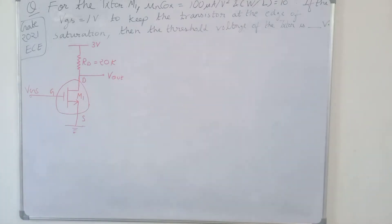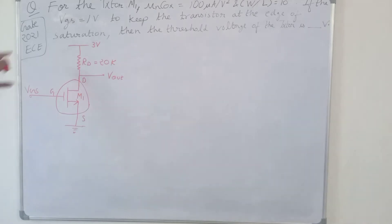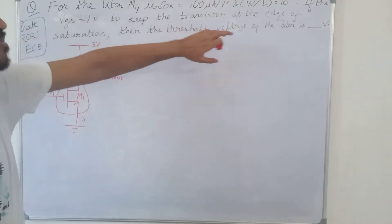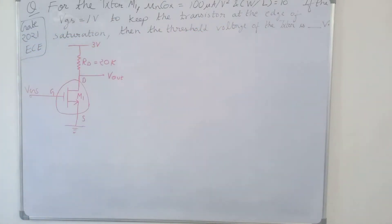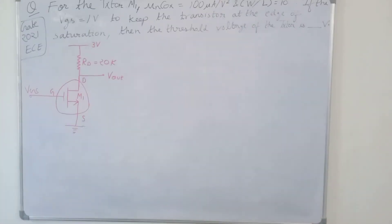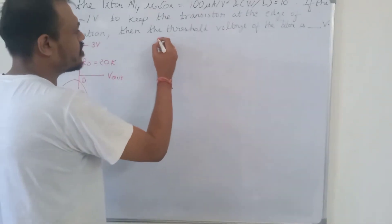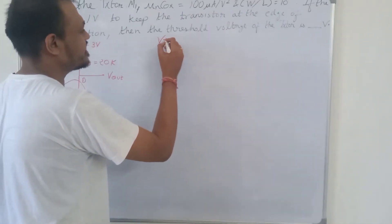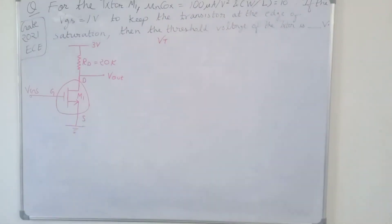For transistor M1, μn·COX equals 100 microampere per volt squared and the W/L ratio is 10. VGS is kept at 1 volt to keep the transistor at the edge of saturation. We have to find VT, the threshold voltage.